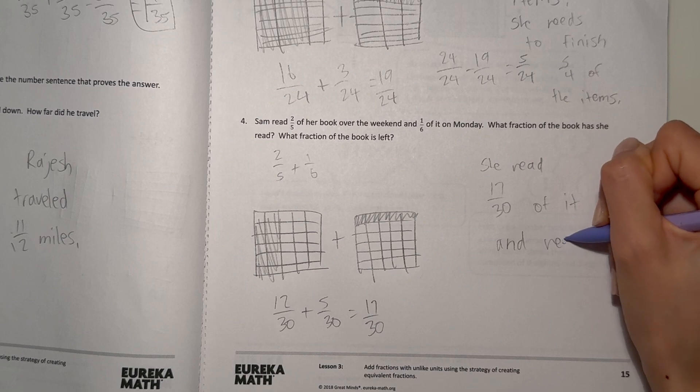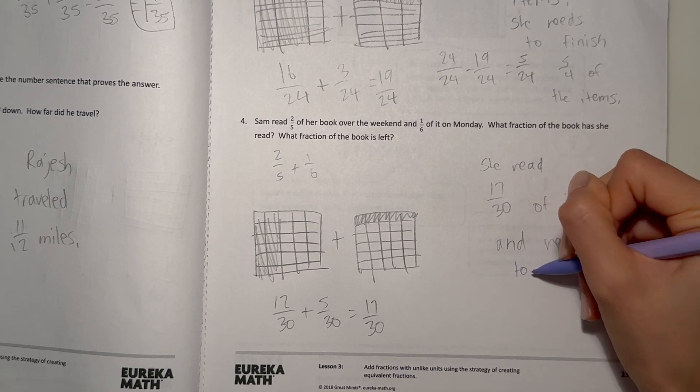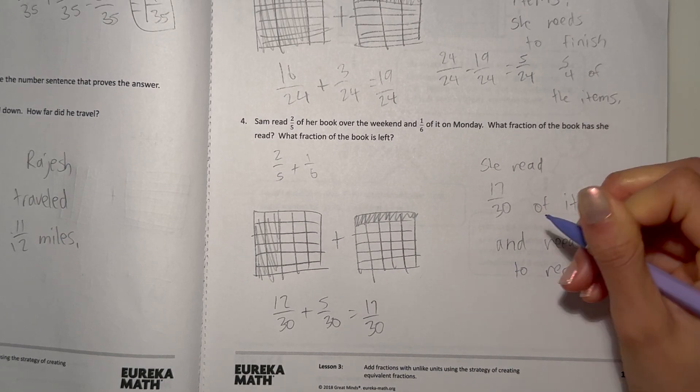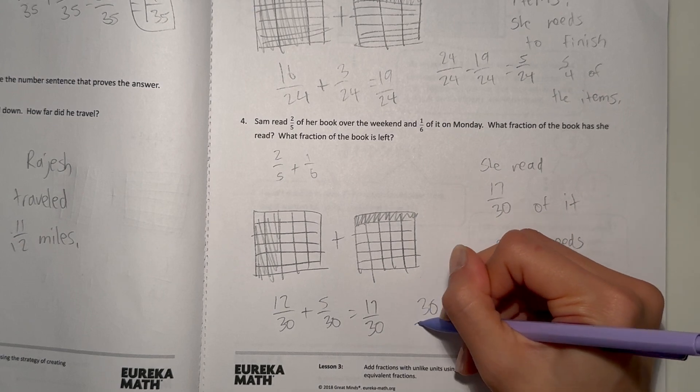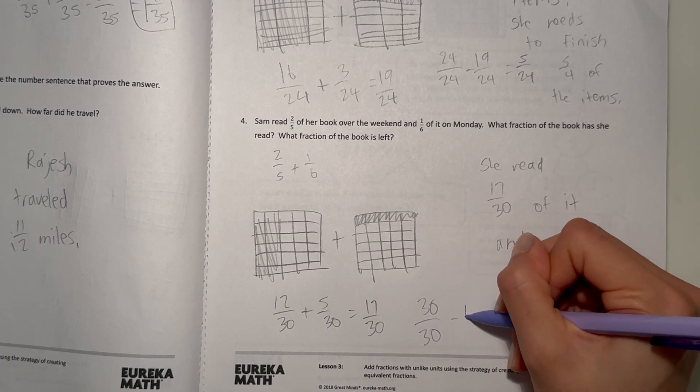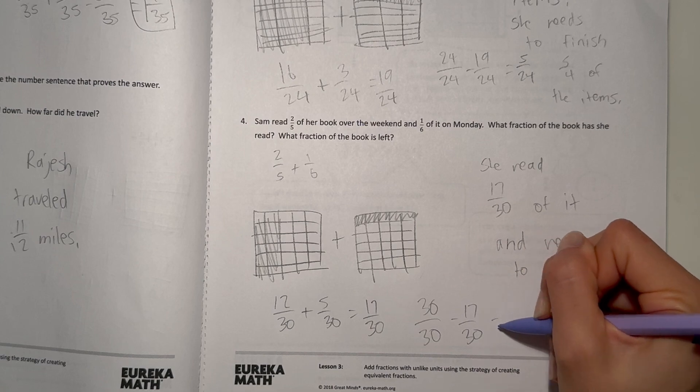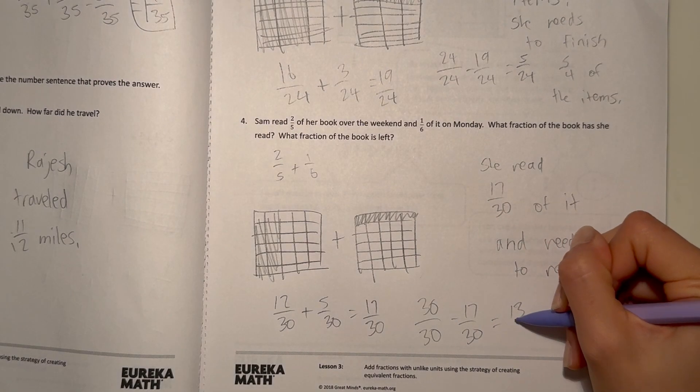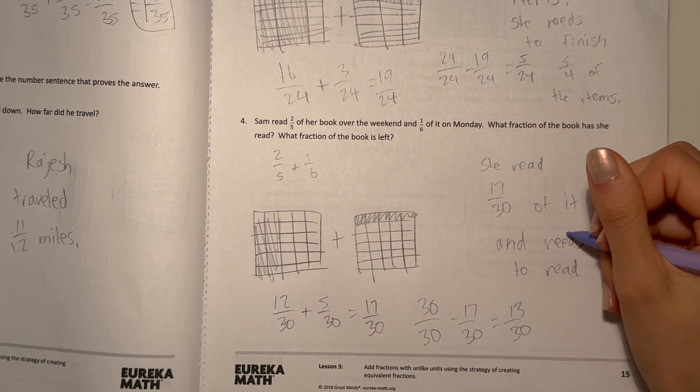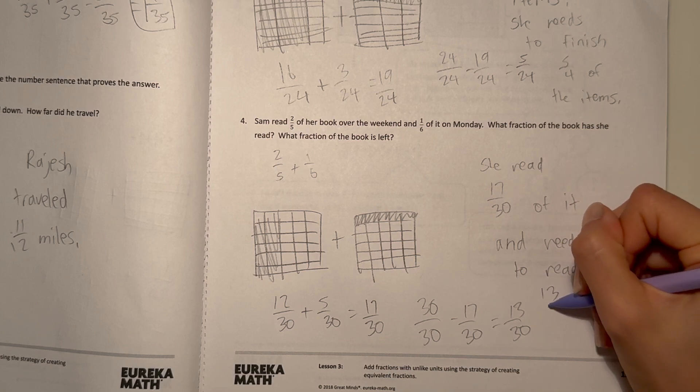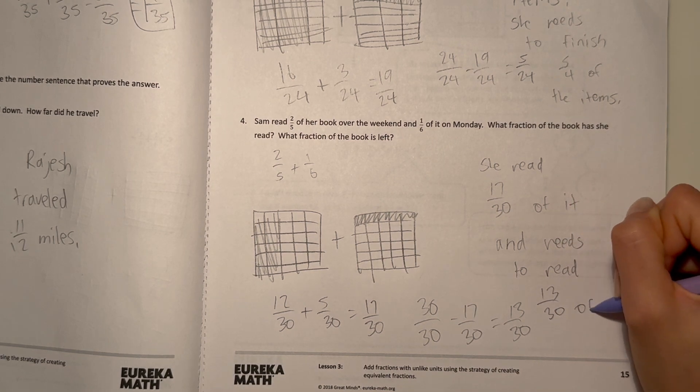And needs to read, see a whole is thirty over thirty, so thirty minus seventeen, fifteen equals thirteen. So she needs to read thirteen over thirty of it still. So yeah.